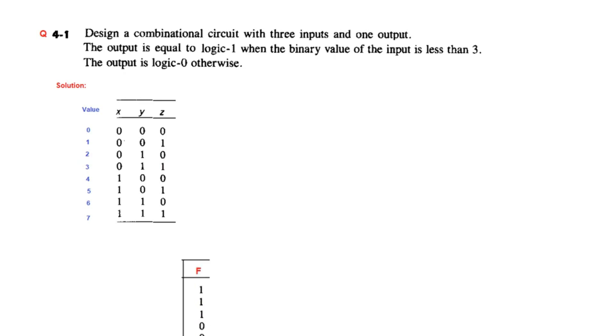Let's plot the output. This is the output function. For these three values we have written 1, and for the remaining we have written 0. Now we can design the circuit with the help of a K-map.